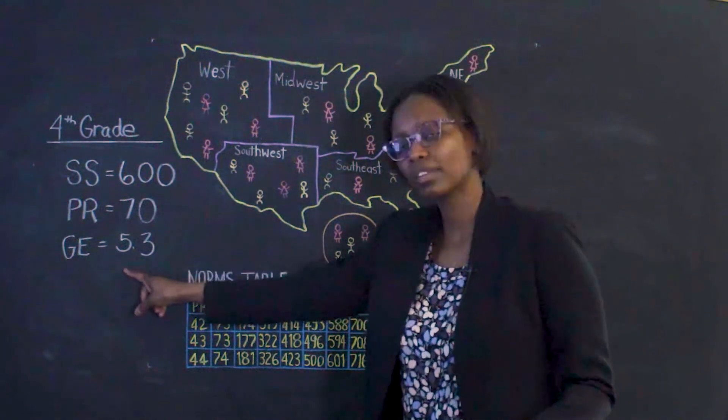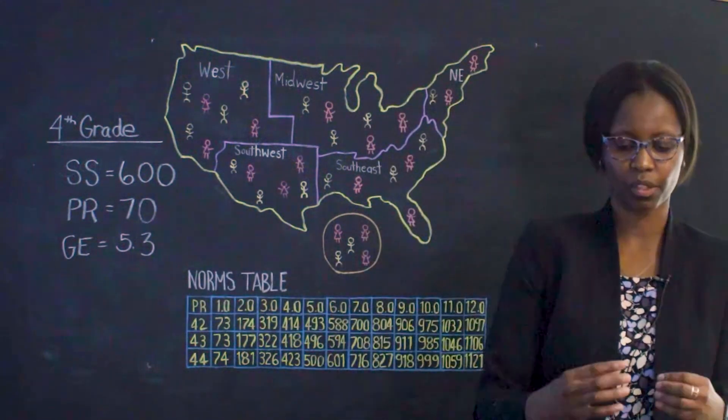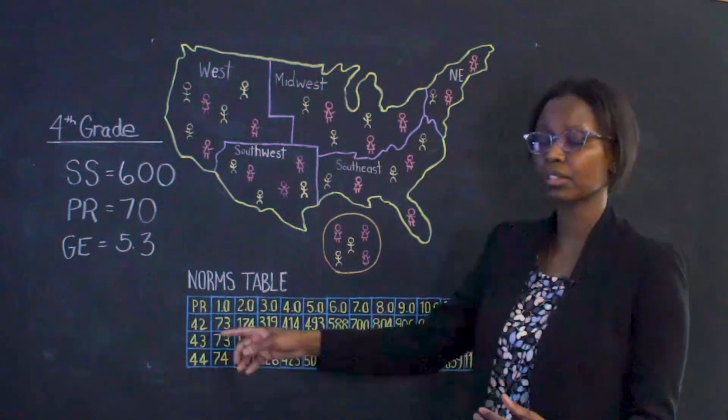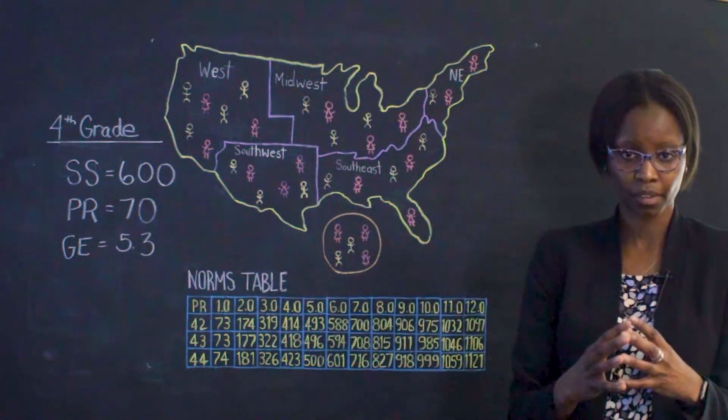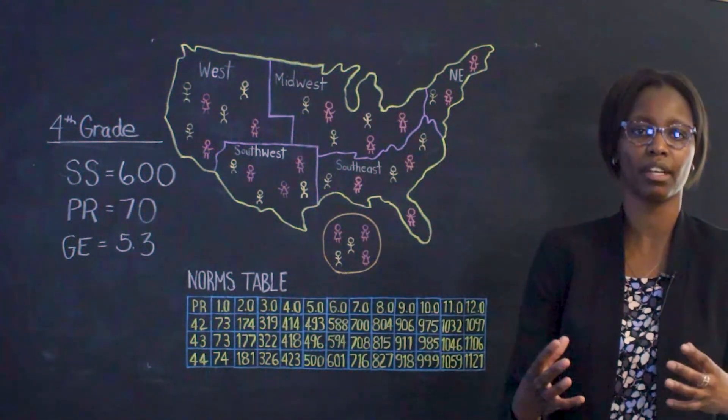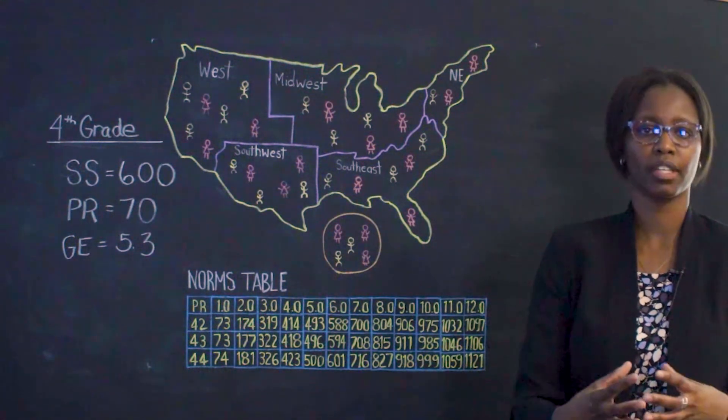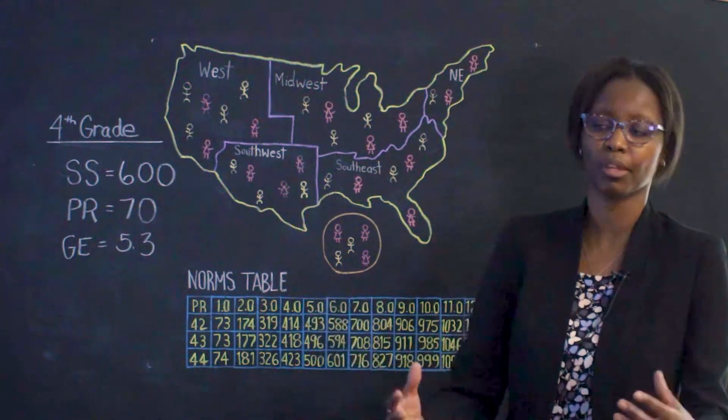Now, what does the grade equivalent tell you? That tells you that this performance by the fourth grader is typical of a fifth grader in the third month of the school year. It does not tell you that they can do fifth grade work. It tells you their reading achievement is above average for fourth graders who test at the time that the student tested in the month of February.